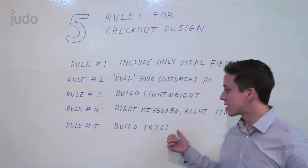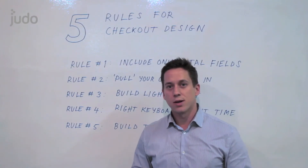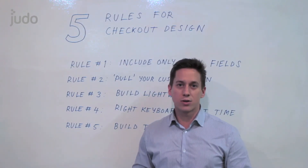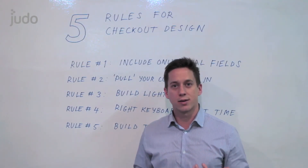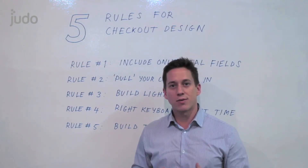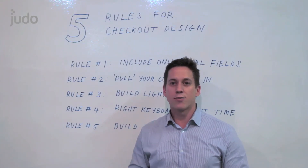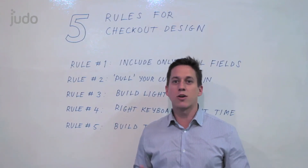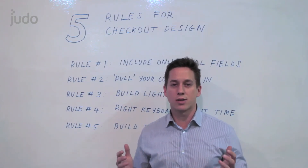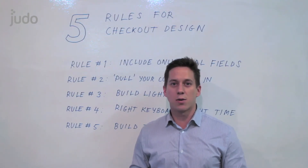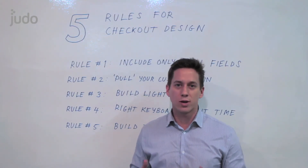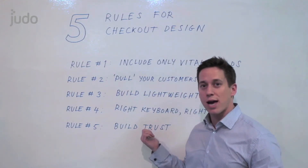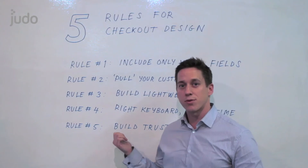That leads into the fifth and final principle: building trust. In a checkout process in particular, you need to convey to your consumer that you are a trustworthy entity and that there's a good reason for them to hand over their card details and any personal information. This starts with general design and UX across your entire mobile app — is it well done, well put together, are the colors coordinated? But when it comes to checkout specifically, there are actually dramatic differences that come from doing three simple things.